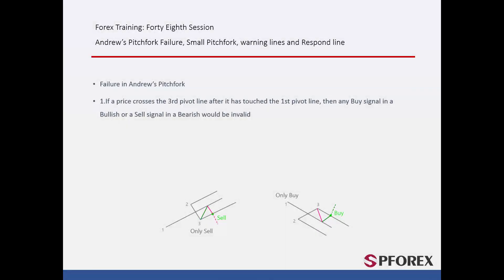Failure in Andrew's pitchfork: In an Andrew's pitchfork pattern, if a price crosses the third pivot line after it has touched the first pivot line, then any buy signal would be invalid in a bullish pattern. On the other hand, if a price passes the third pivot line after it has touched the first pivot line, then any sell signal would be unreliable.